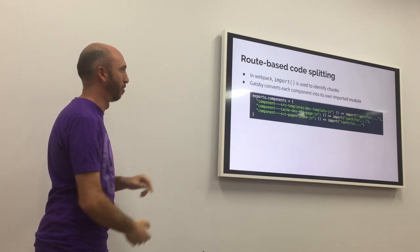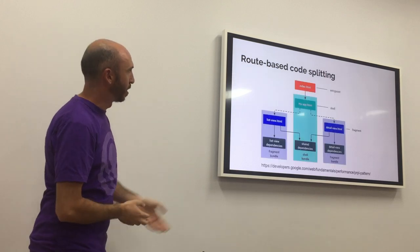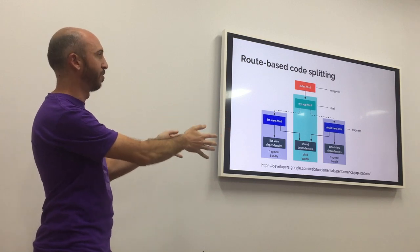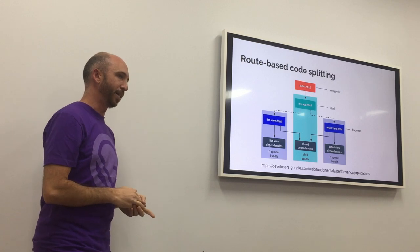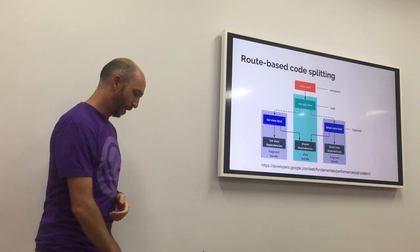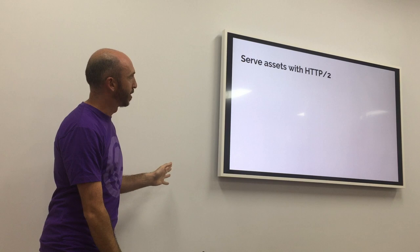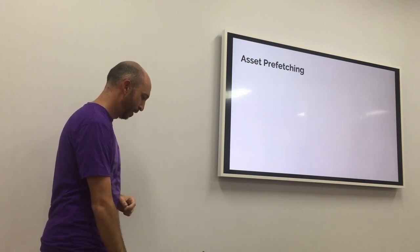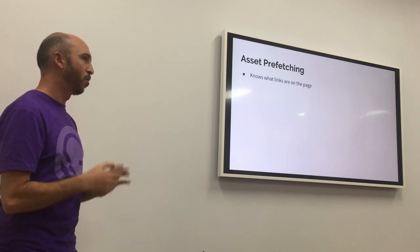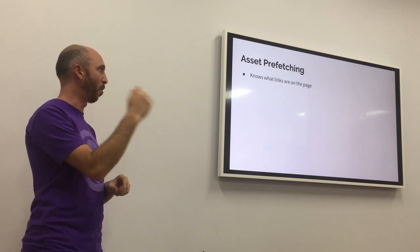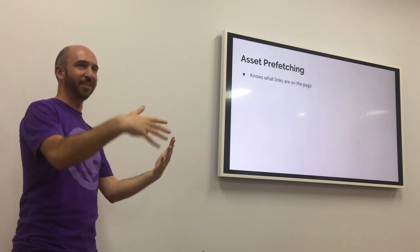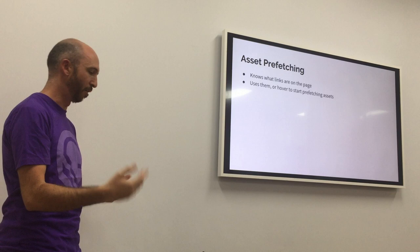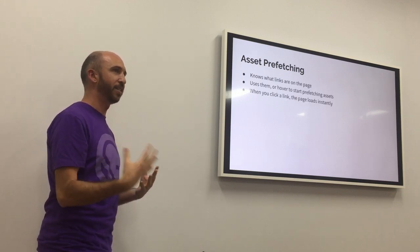You end up with essentially a main bundle for the first page load, and then for your other pages just the JavaScript and CSS that you actually need for those pages. Gatsby is able to figure out what a page is very easily — it's very declarative in that way. This is all happening for free. We can also serve assets over HTTP/2, so we get multiplexed downloads and the server can push information to the browser. Asset prefetching is a fun one — we know what links are on your page via Gatsby-specific link components. As soon as the page loads, we can start prefetching those other pages. If you hover over a button, we start prefetching that page immediately. The result is that for the vast majority of clicks, that page loads instantly.